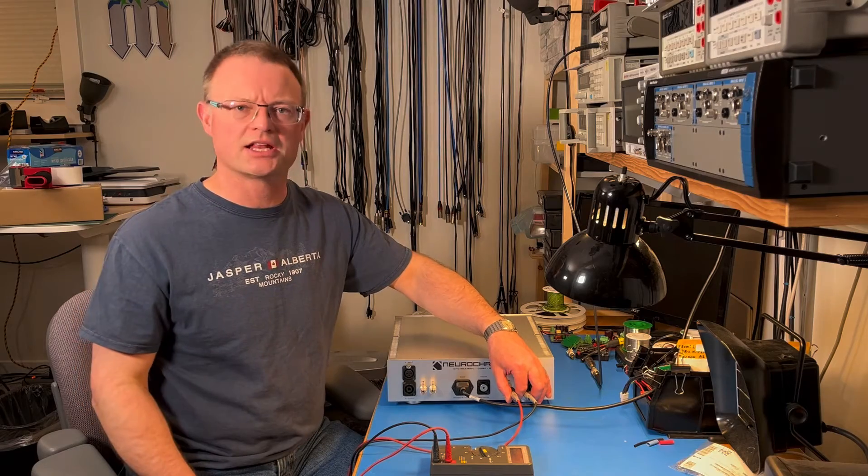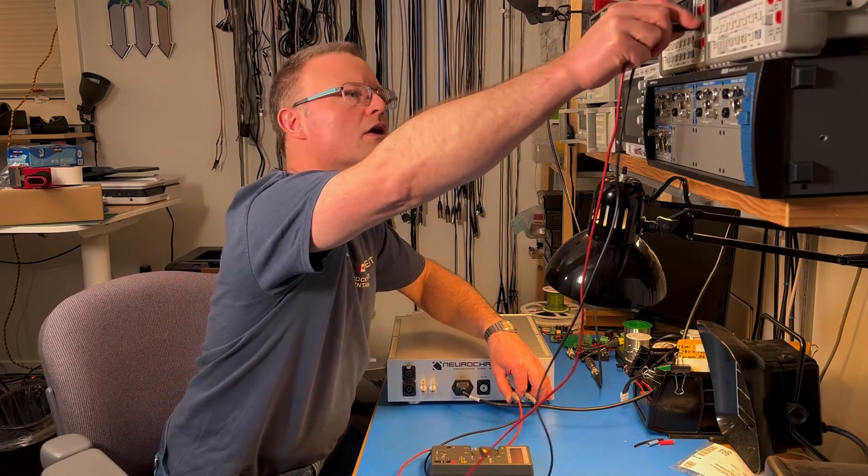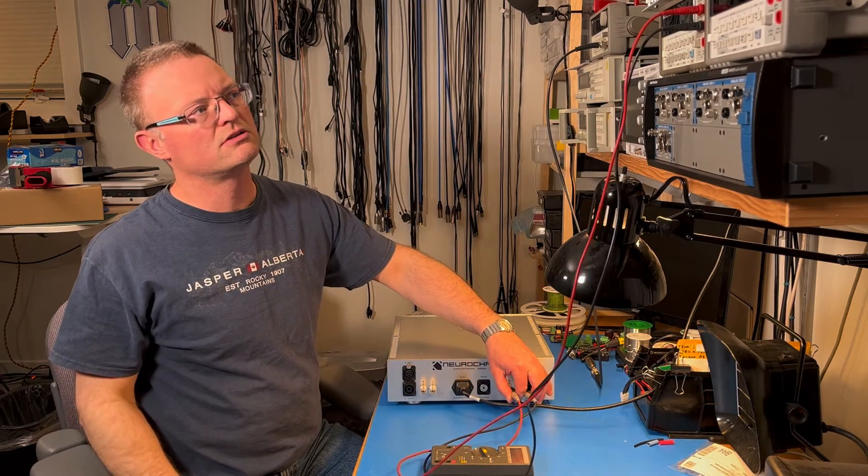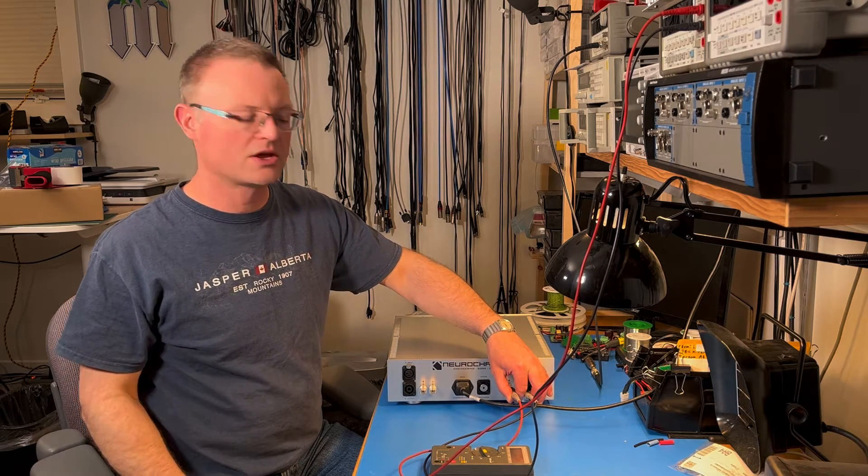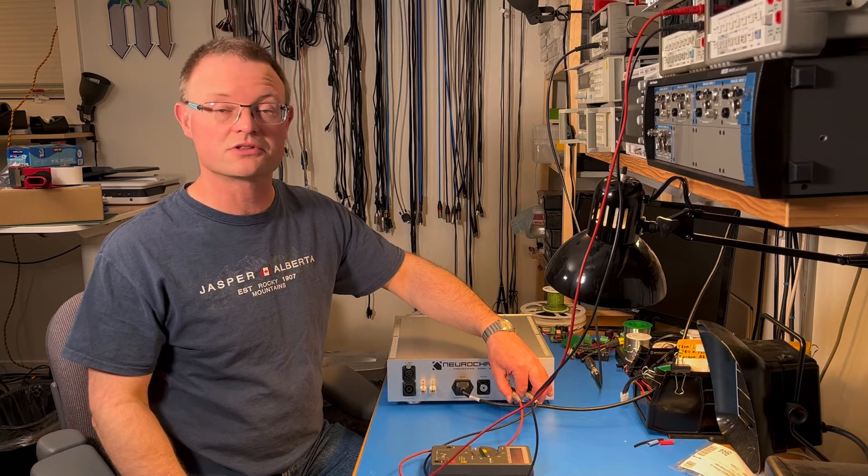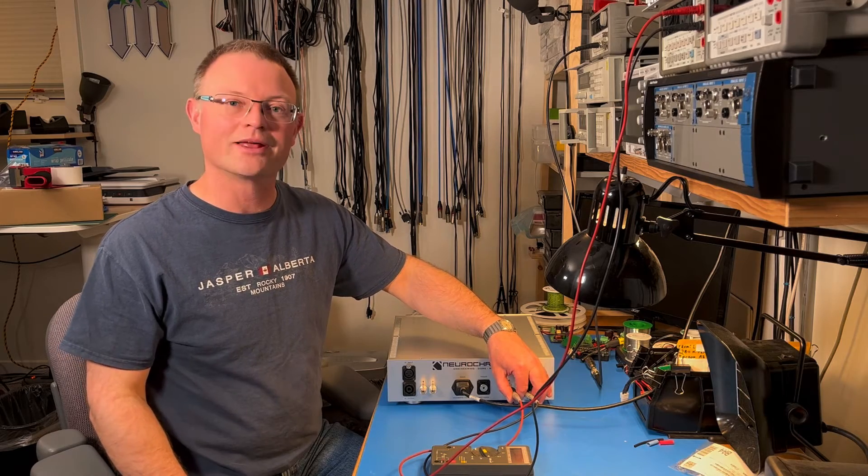Just as a sanity check, let's just compare that real quick with the six and a half digit benchtop meter. And I measure minus 573 microvolts. So the 30 year old handheld meter is actually pretty darn close to the calibrated six and a half digit meter, which is impressive. That's not bad.